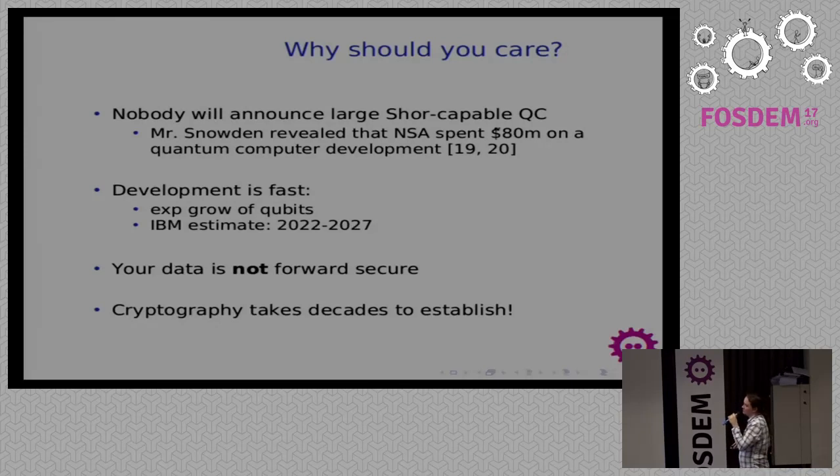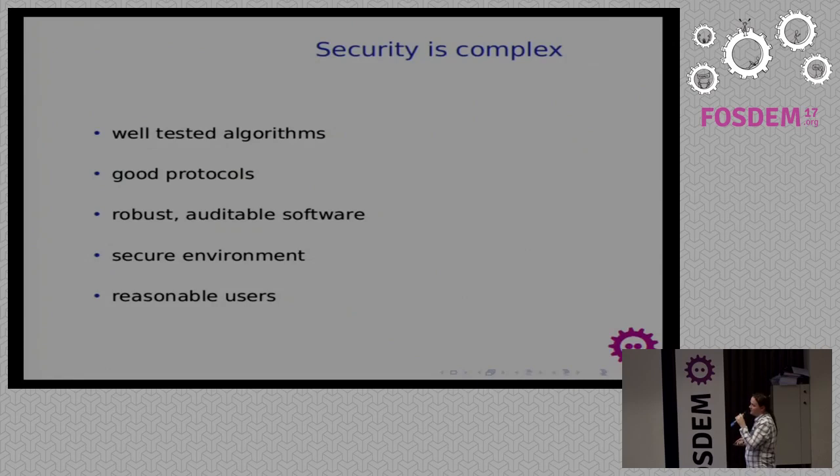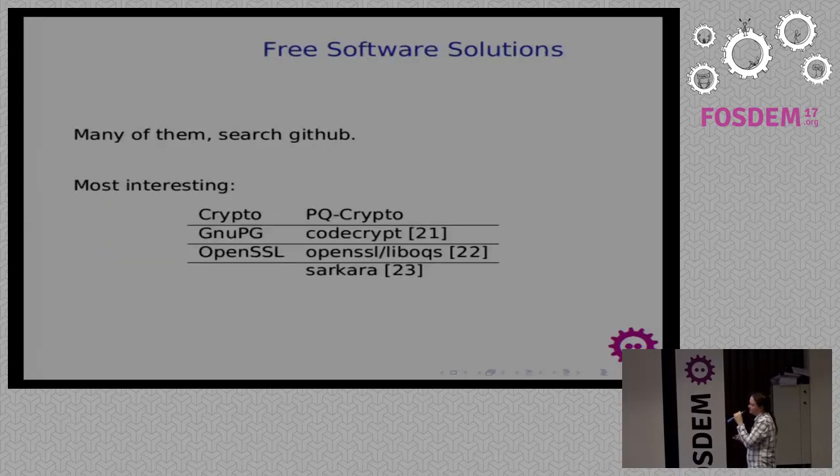Why should you care? Because nobody will announce to you that they created a quantum machine capable to break RSA. A lot of money is invested in this and Snowden shows that NSA spent 50 million dollars on development of such machine. Links are available. And, well, we have to be prepared to this, right? Development is fast and your data is not forward secure right now. It can be recorded and it is recorded. And it can be decrypted later in some years. So we need to develop new solutions. But developing substance security is very complex. We need to use well-tested algorithms, good protocols, good software and secure environment. Of course, users not using too simple passwords. So what free software can do here?